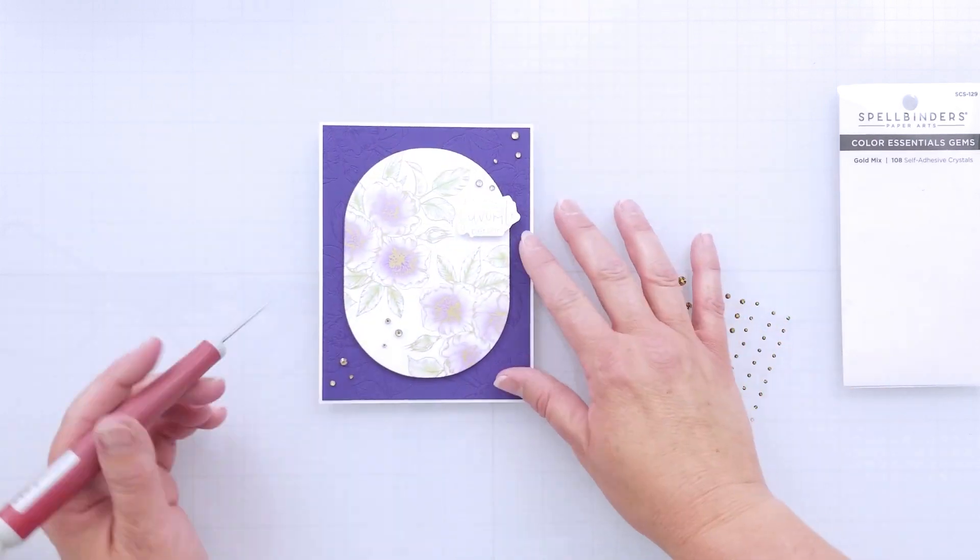I'm just going to add kind of a spray of gold mixed gems across the front of the card, just for a little bit of sparkle. And again, I'm adjusting them like I always do until I'm happy, and then I'll press them down really good once I'm done. And here's the finished card.